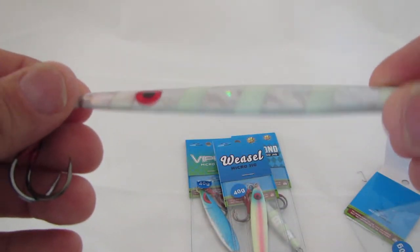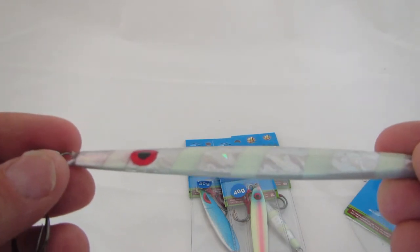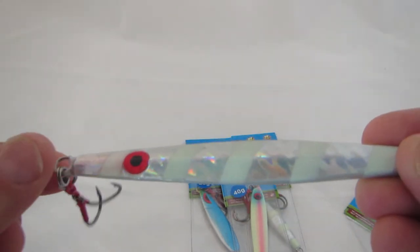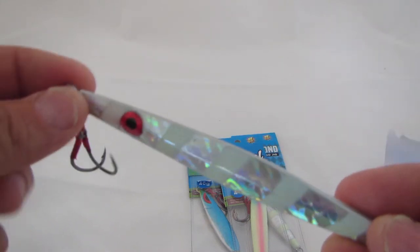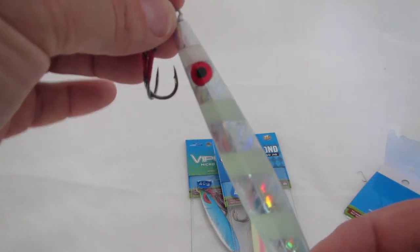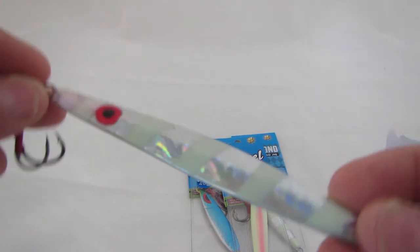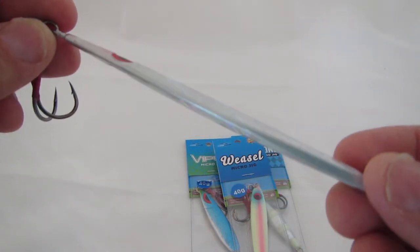You can twitch it up and then it falls on the horizontal, so make sure you let it fall on the horizontal. It's important to let it sit on the bottom as well. So that's the knife jig for deeper waters when it's a bit windier, for getting down, yeah, maybe windy days with a bit of current around.